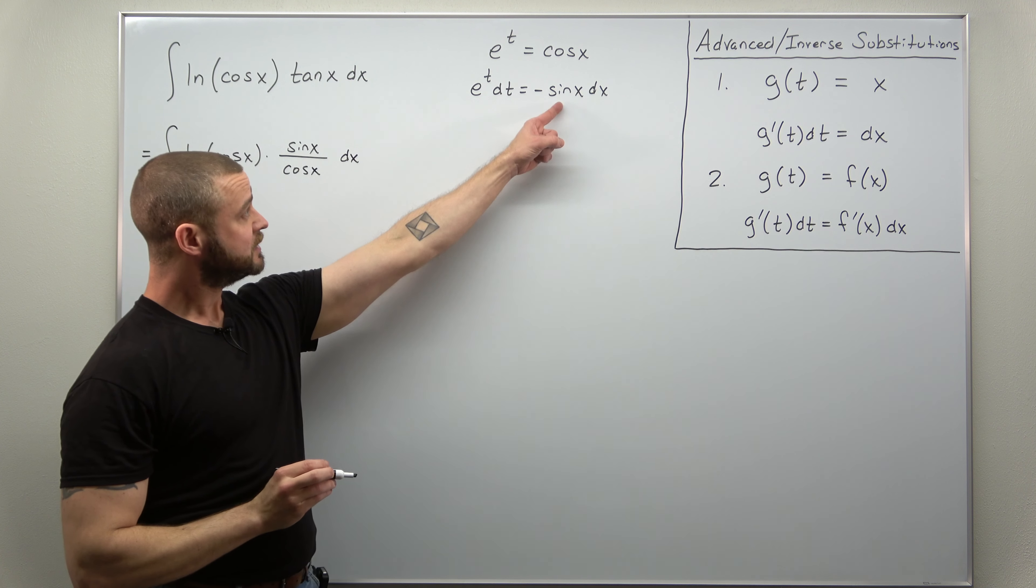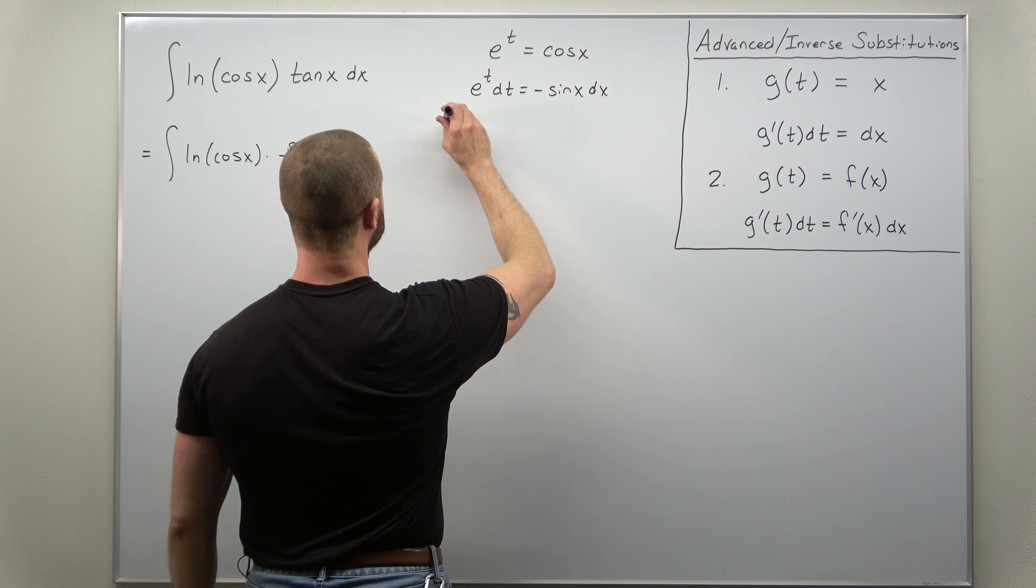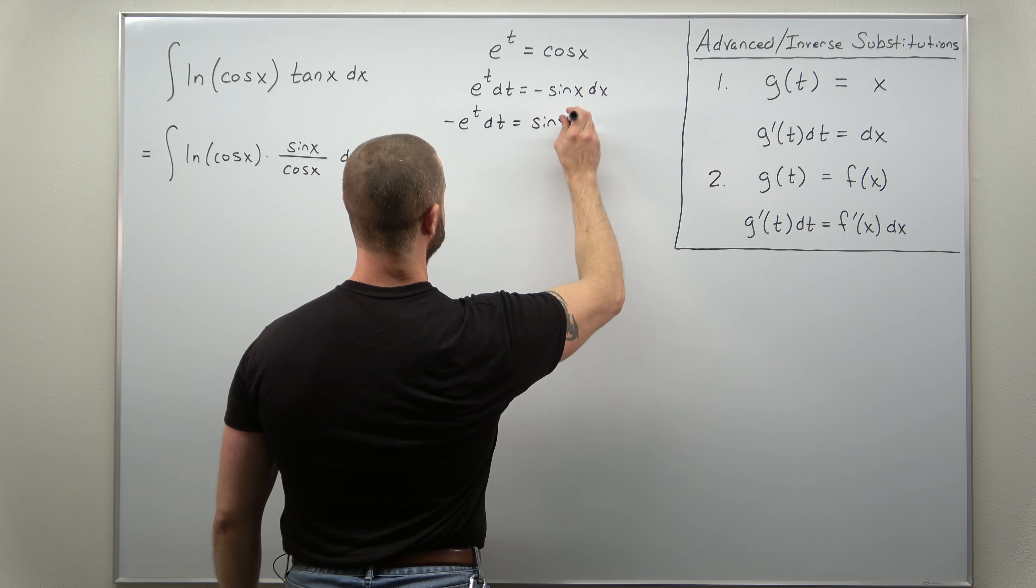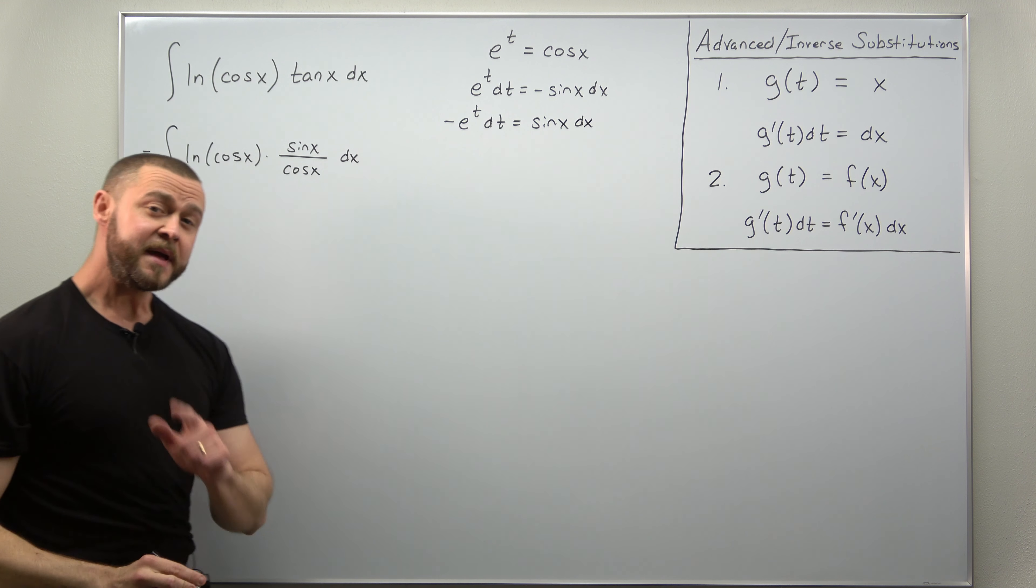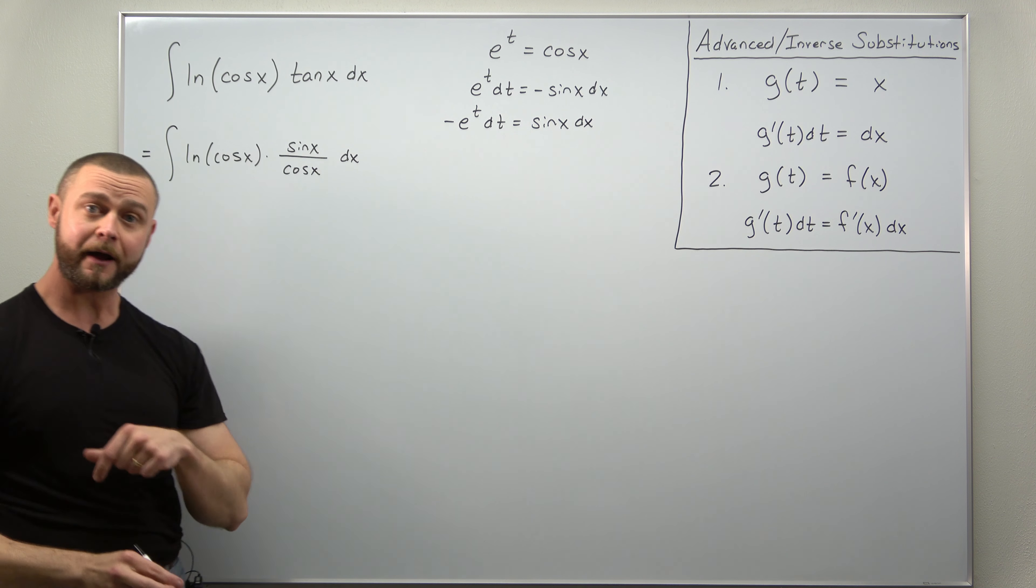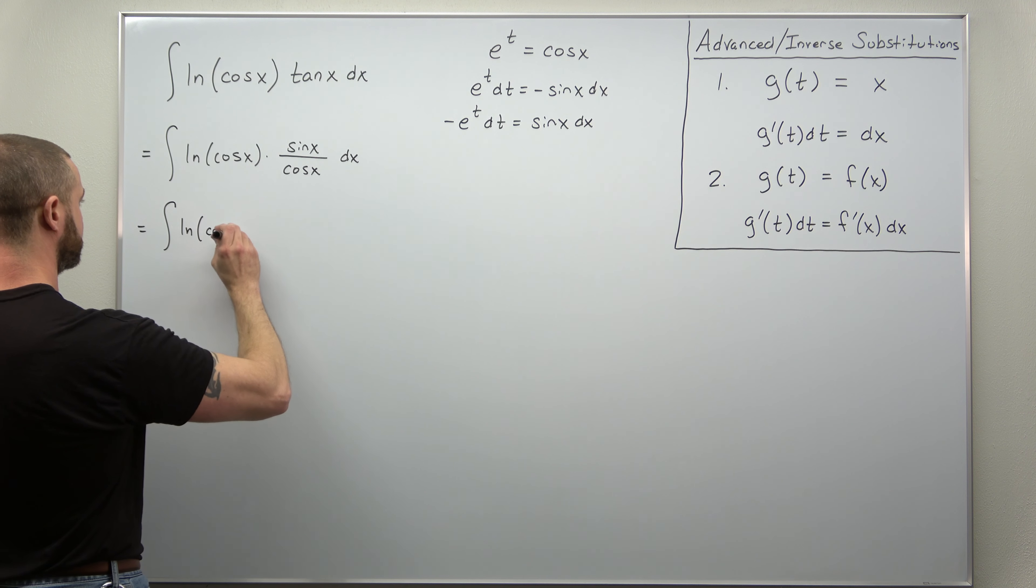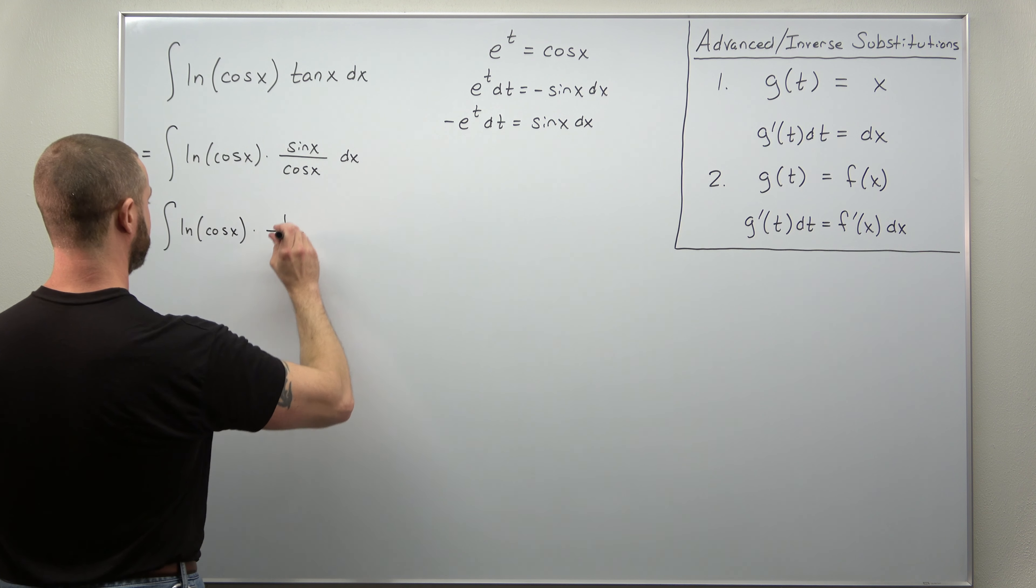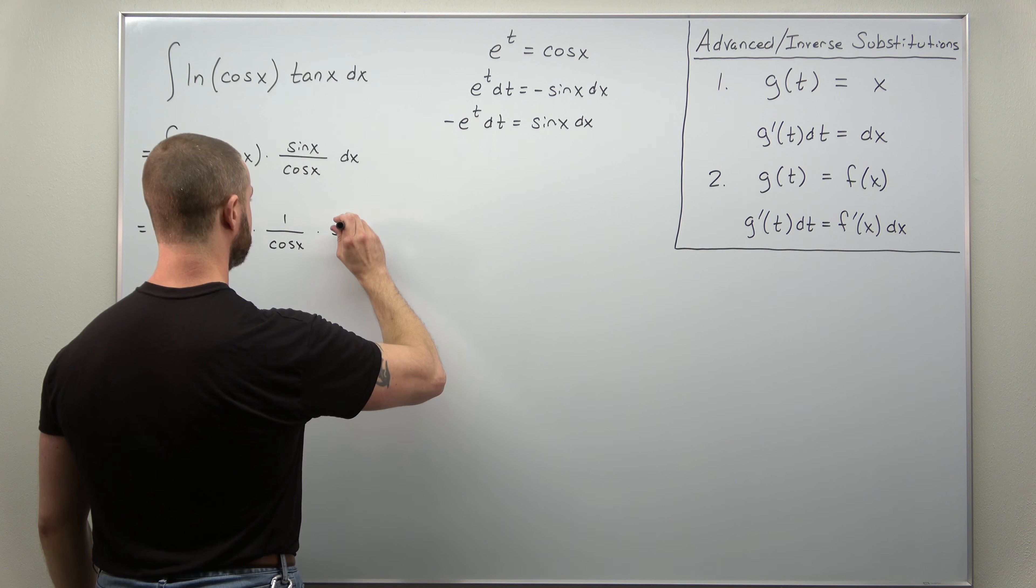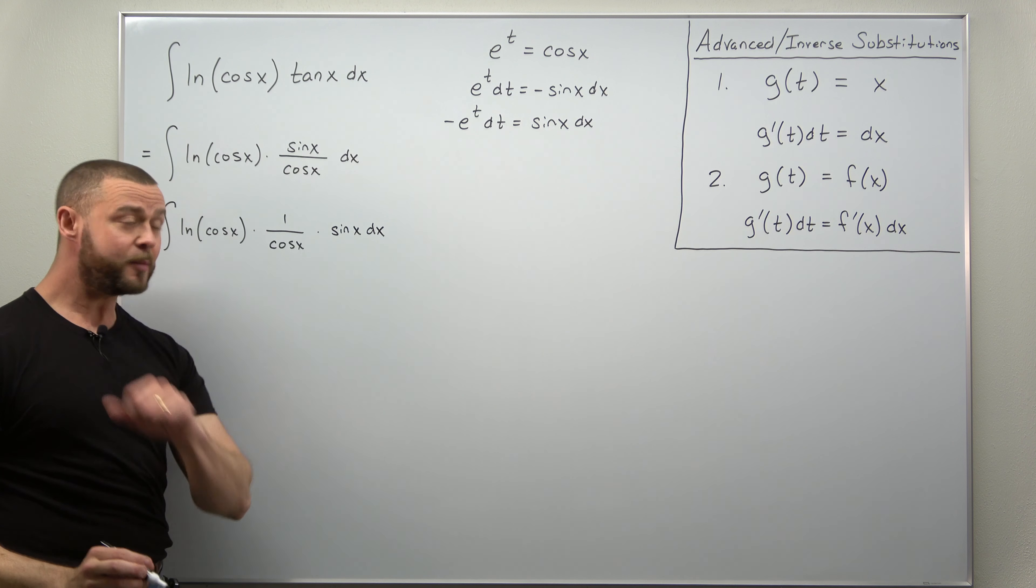All right, now we need sine of x dx also the negative, but let me go ahead and bring that negative to the other side. We'll write, and to make the replacements a little bit more obvious, let me rewrite this fraction as one over cosine of x times sine of x. We'll keep the natural log of cosine of x term the same. We'll write that as a factor of one over cosine of x and then times sine of x dx. And now we should be able to implement our substitution.